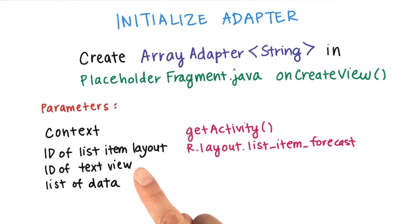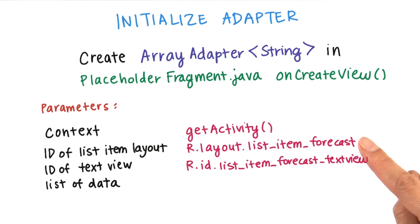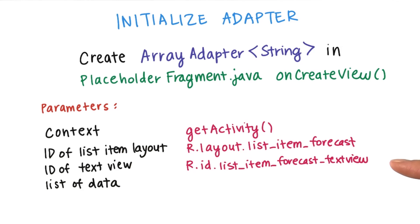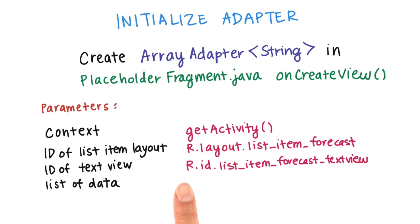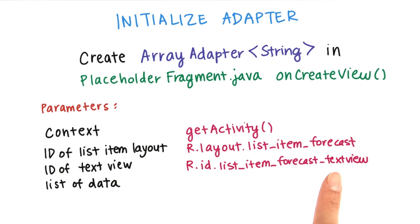Next, the array adapter needs to know how to take the weather forecast string and set that to be displayed in a text view, so we pass in the ID of the text view that we defined earlier in the list item layout. Even though these two resource IDs look similar, one starts with R.layout while the other starts with R.id. R.layout refers to a layout file, while an ID refers to a specific XML element with the matching ID attribute.